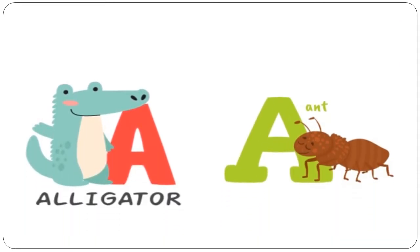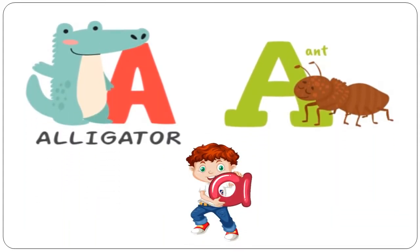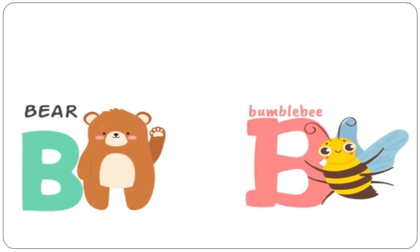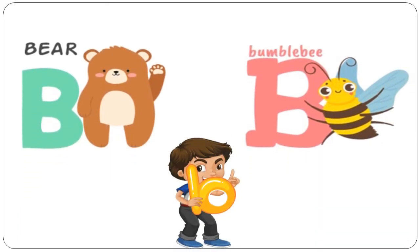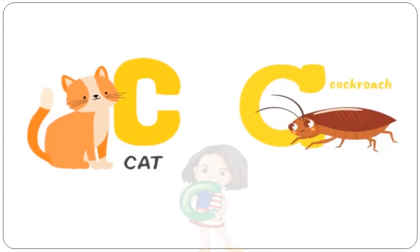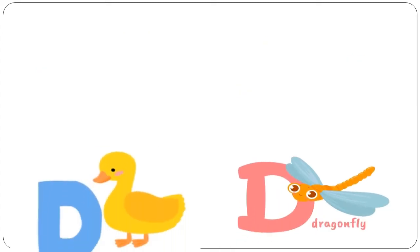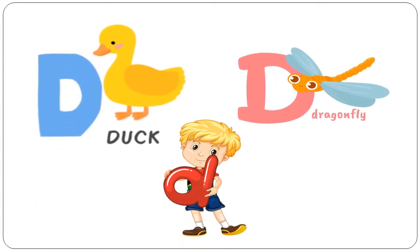A is for Alligator. A is for Ant. B is for Bear. B is for Bumblebee. C is for Cat. C is for Cockroach.